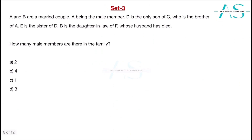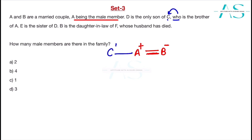Next question: A and B are a married couple and A is the male member. So A is plus and B is minus (female). Remember, married couples always consist of two different genders in these exam questions. D is the only son of C, who is the brother of A — so C is male and is A's brother.